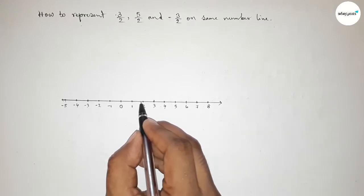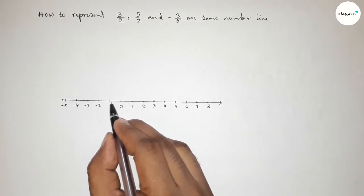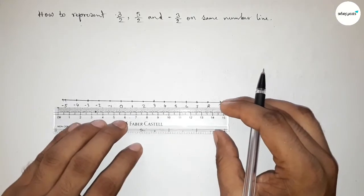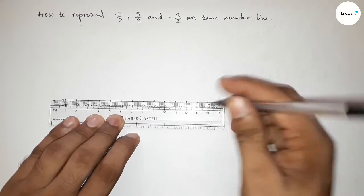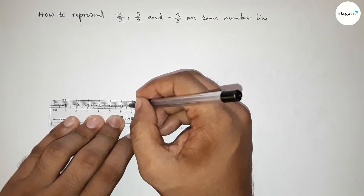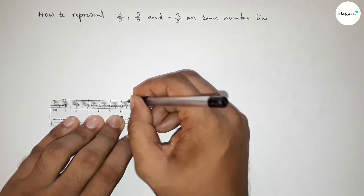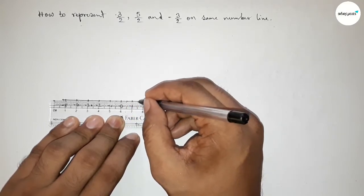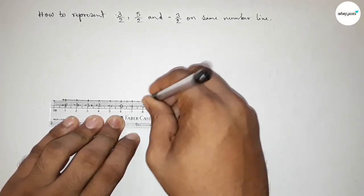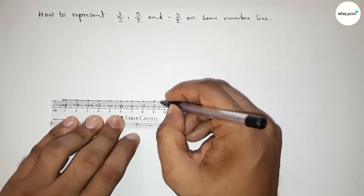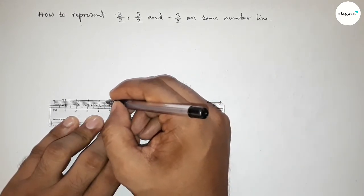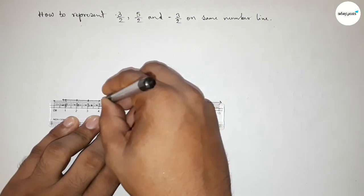Now we have to divide the distance between any two numbers into half. First dividing between zero to one, then one to two, then zero to minus one. This is the half between zero to one, one to two, two to three, three to four, and four to five.